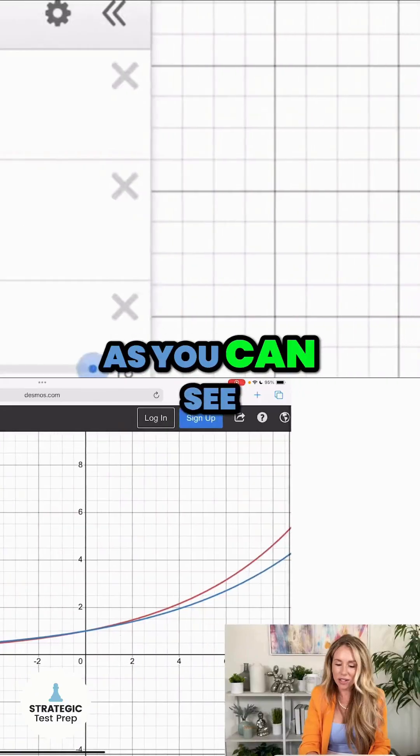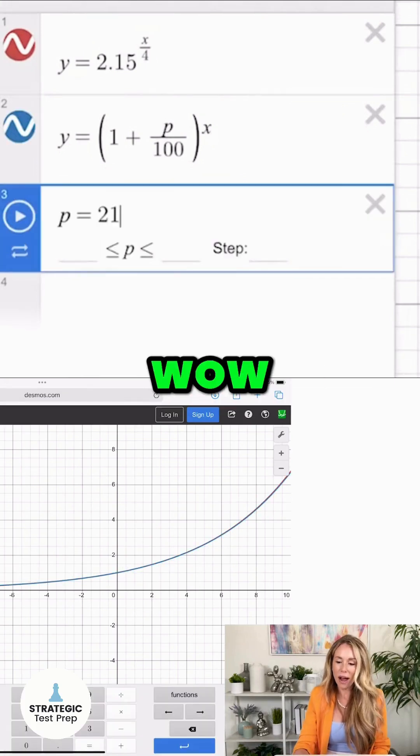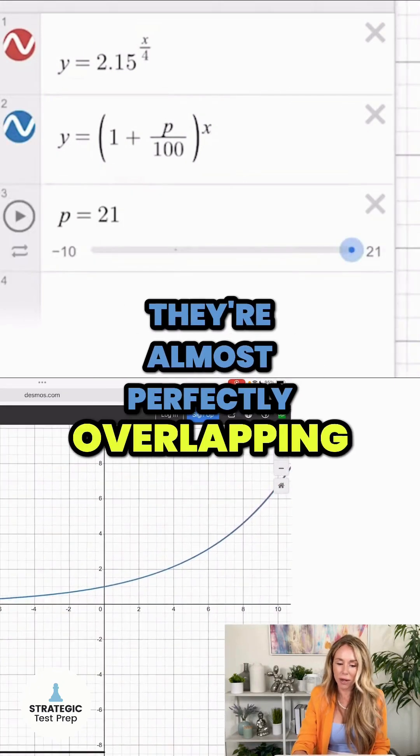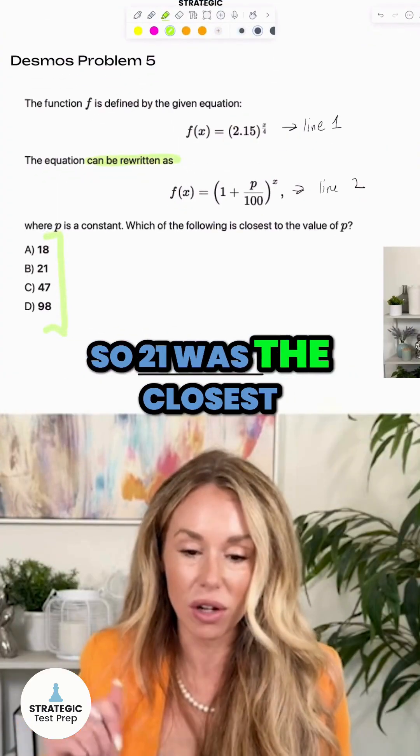So I'm going to try 18 first. Now, as you can see, those graphs really are not exactly the same. Let me try 21. Wow, they're almost perfectly overlapping. If I go to the next one, 47, now they get further apart. So 21 was the closest.